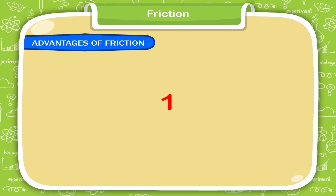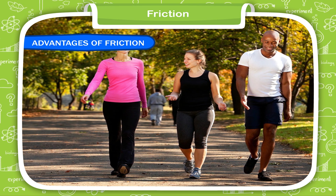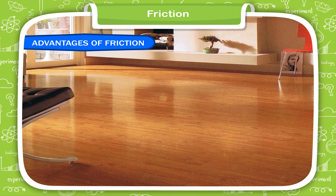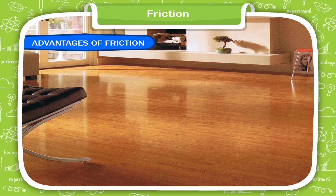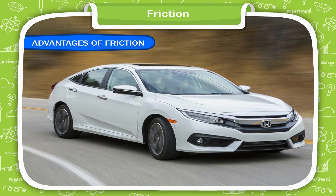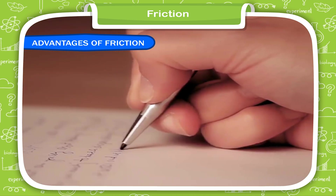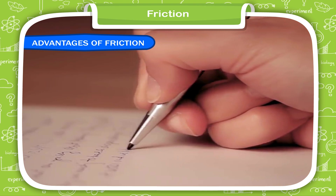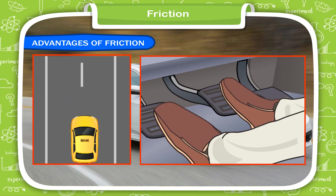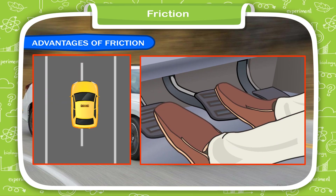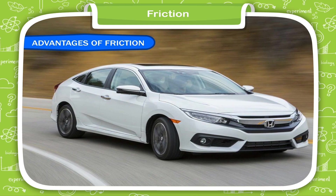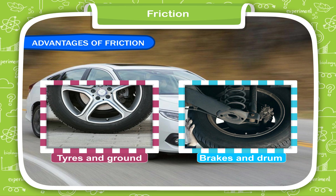1. Due to friction, we are able to walk on the ground. You know how difficult it is to walk on a slippery ground where friction is much less. 2. Friction permits us safe driving on the ground. 3. We are able to write on a paper because of friction between a paper and a pen or a pencil. 4. The application of brakes stops a car because of the presence of friction between tires and ground and also between brakes and the drum of the wheel.